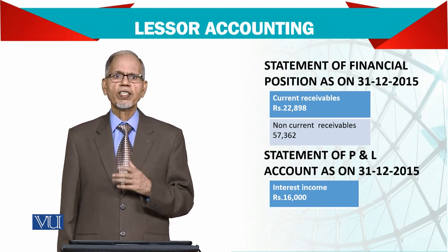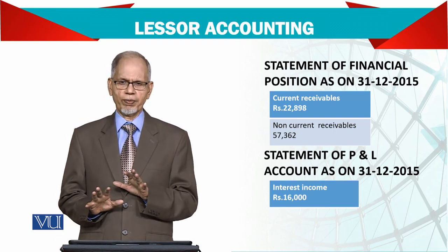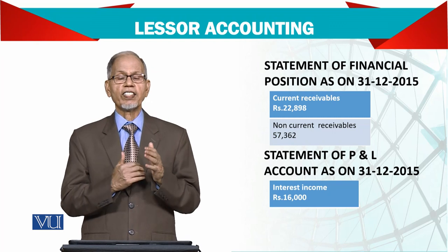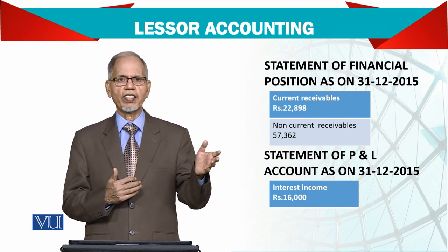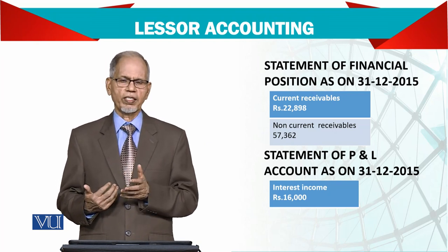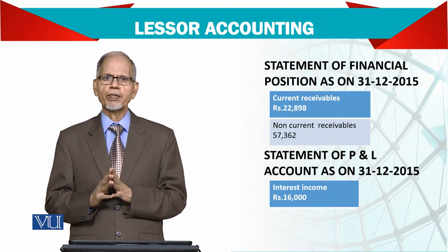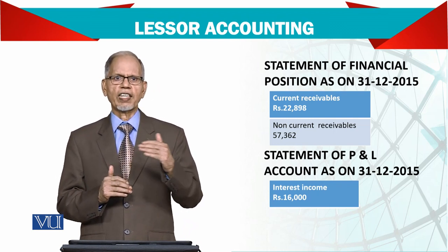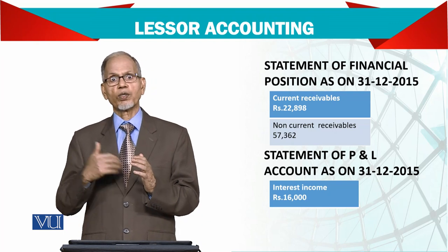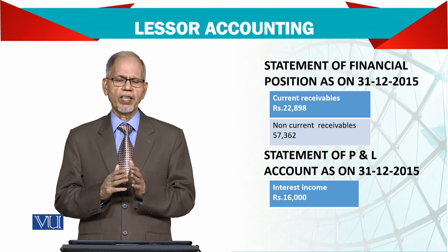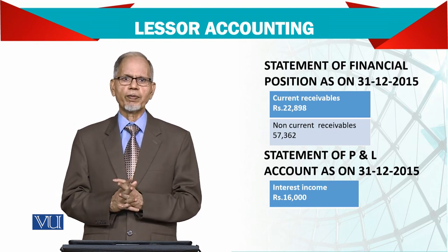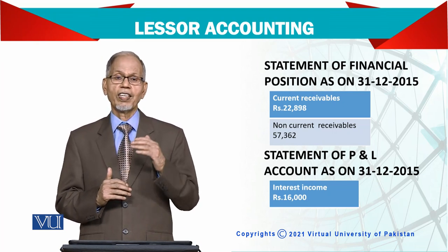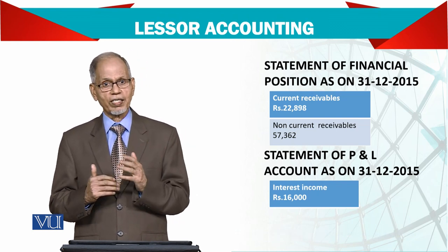In the case of the lessor there is not much complexity. He simply records the receivable and credits the asset, records income when interest is earned, and records payments received by debiting cash and crediting rental receivable. In the income statement only interest income appears, and in the balance sheet receivables are split into two parts — current, being what is received next year, and non-current for everything after. IFRS 16 recommends that you separate the current and the non-current, just as on the liability side we have current and long-term.